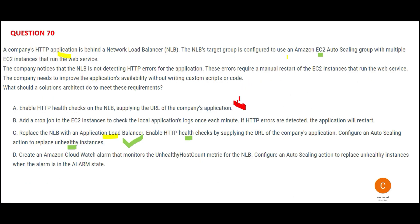Option A is wrong because HTTP is not supported by NLB. Option B is wrong because it is telling you to create a custom solution — a cron job is a custom solution. When you already have a ready-made solution in the form of ALB, why would you use a cron job? Always remember: if you have a ready-made solution from AWS, do not create custom solutions.